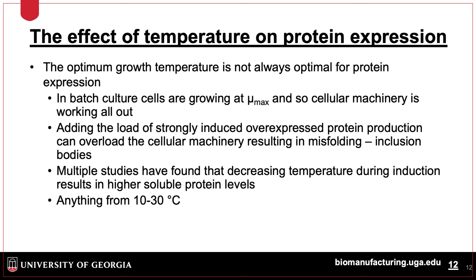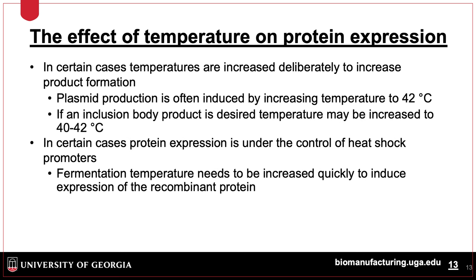For this reason, many fermentations are run at lower temperatures to achieve slower growth rates, resulting in higher product yields. Common strategies include growing cells at optimal growth temperature, then lowering the temperature to between 10 and 30 degrees Celsius after inducing expression. In some cases it is advantageous to increase temperature, such as for plasma production or if expression is under the control of a heat shock promoter, where temperatures up to 42 degrees Celsius may be necessary.